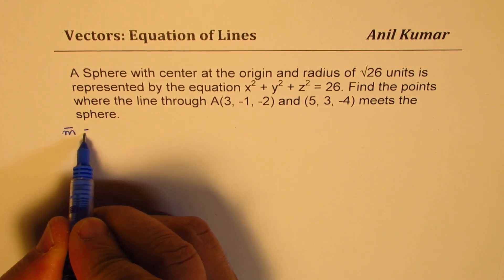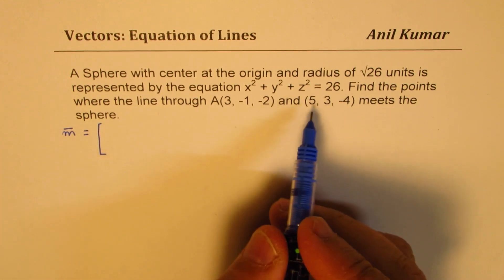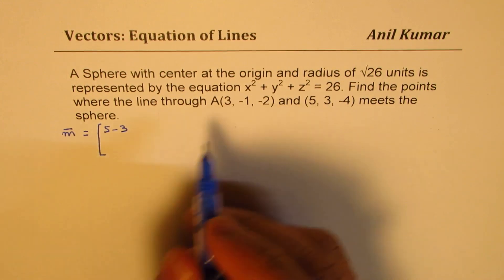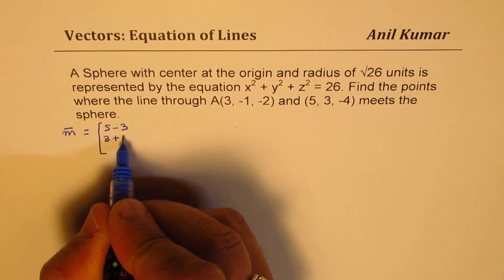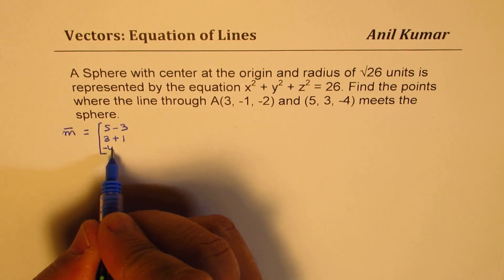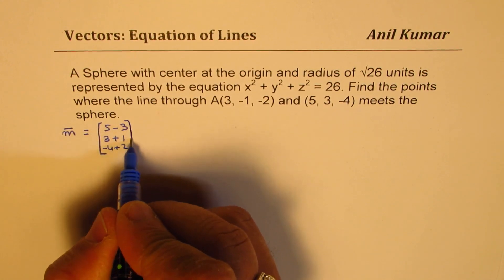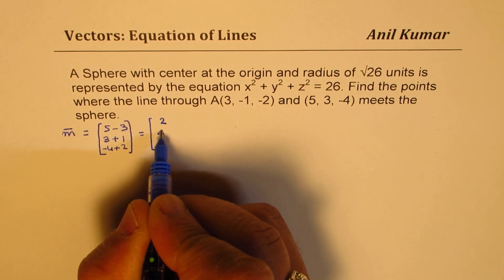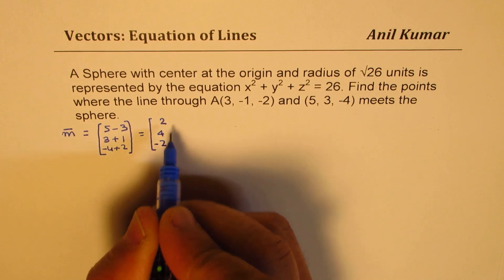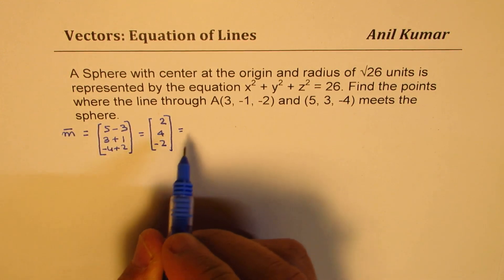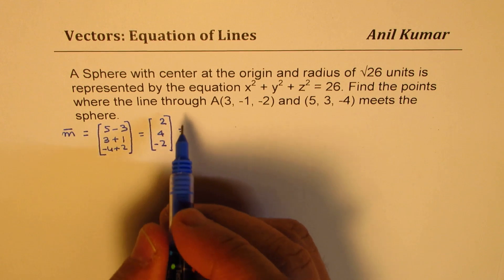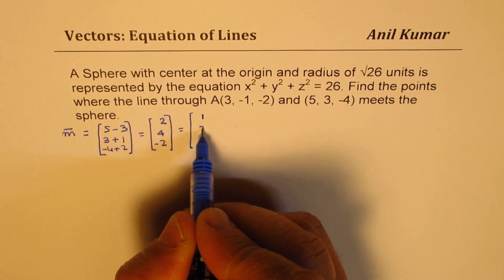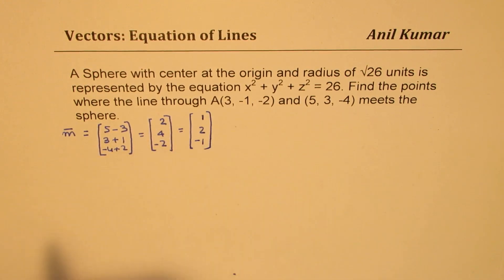The direction vector m can be written as (5 minus 3), (3 minus minus 1) which is (3 plus 1), and (minus 4 minus 2) which is (minus 4 plus 2). So the direction is (2, 4, -2). We can write this in simpler form by taking 2 common, giving us (1, 2, -1). So that becomes the direction.